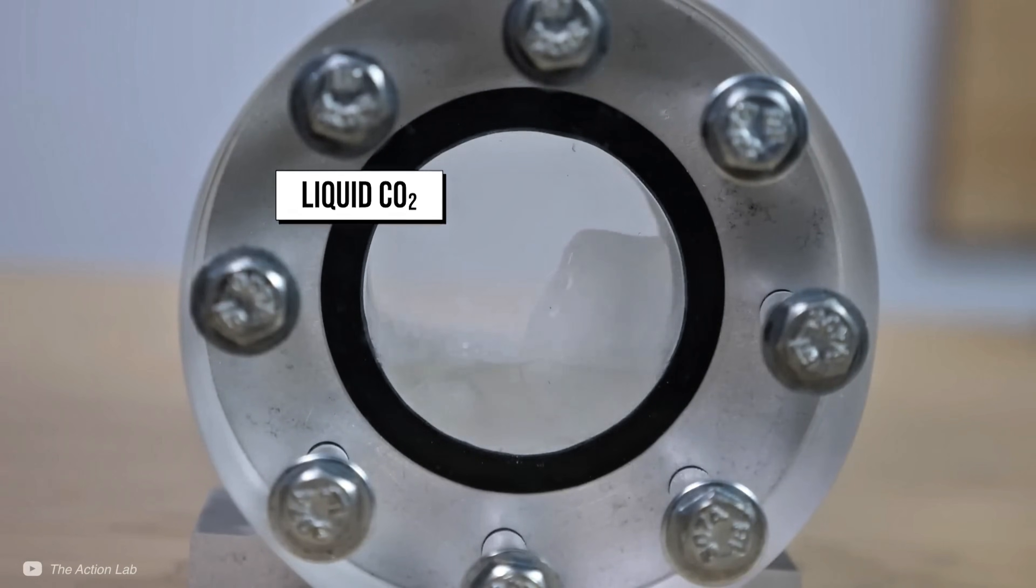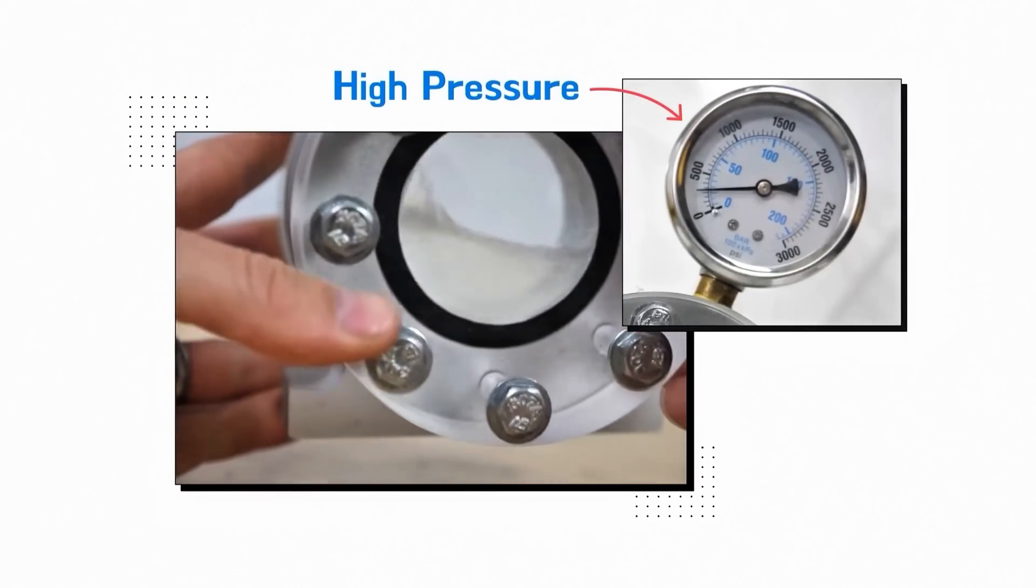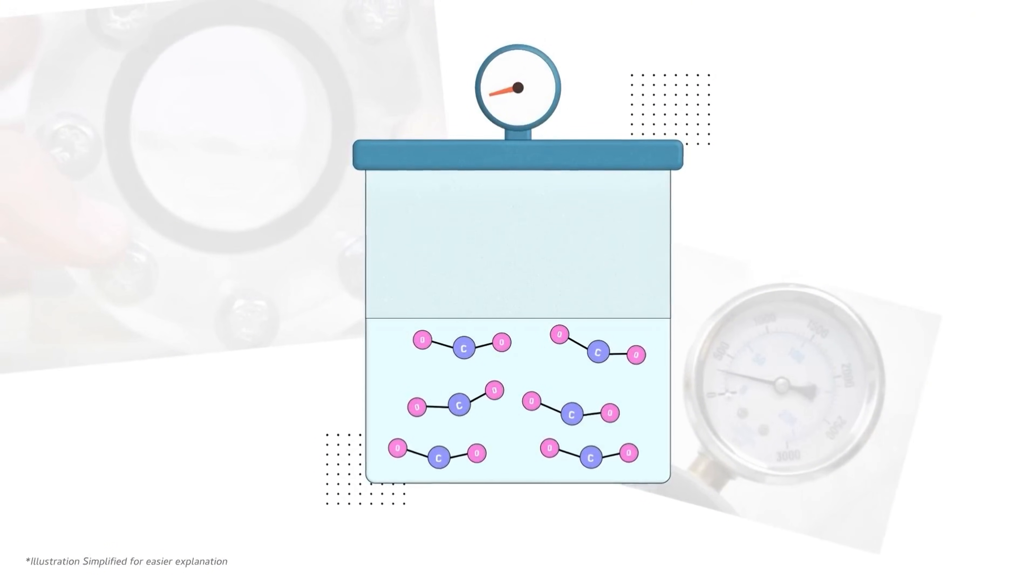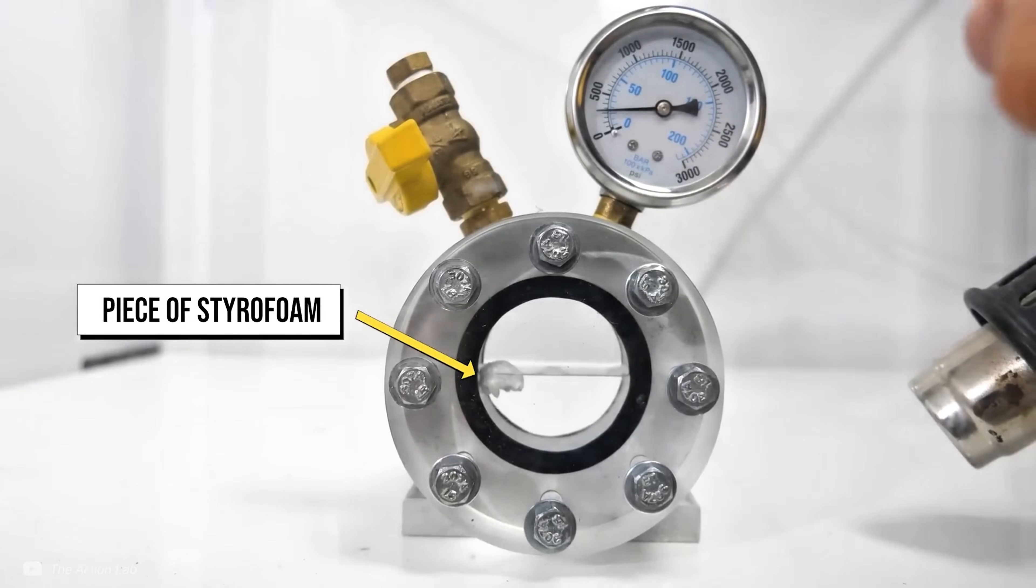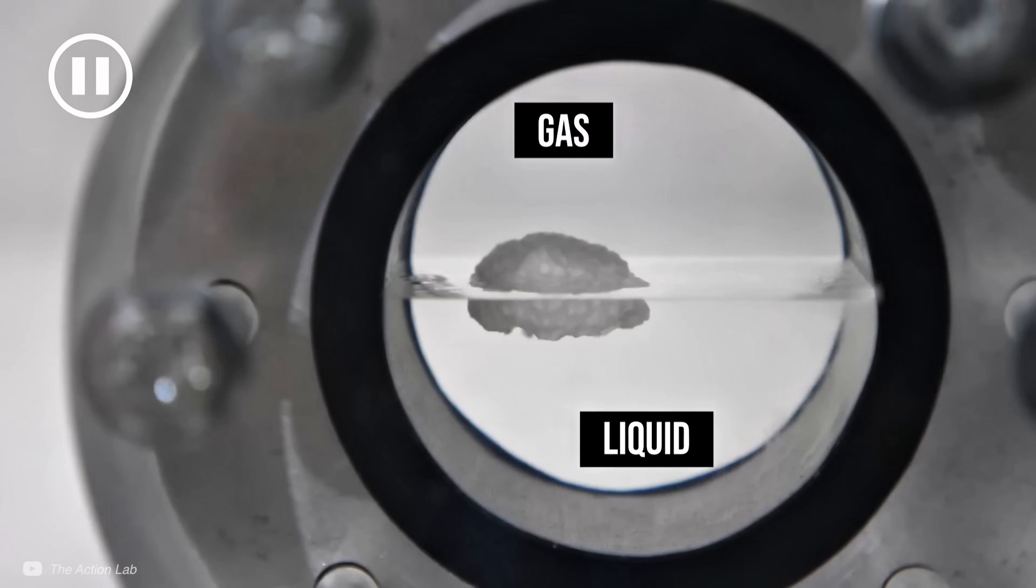This isn't science fiction. Supercritical CO2 turbines are real and they promise to squeeze far more power out of every drop of heat. Think of a turbine spinning on the very CO2 your car exhales. Hard to believe? Let's dive in.